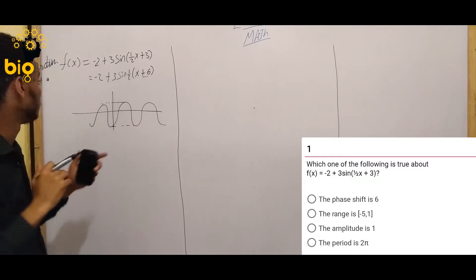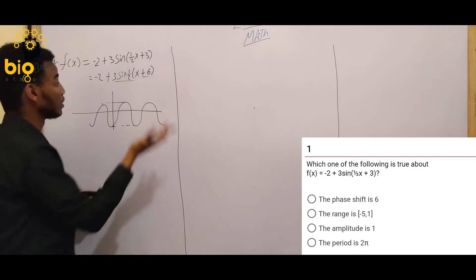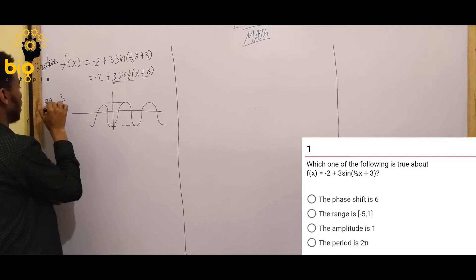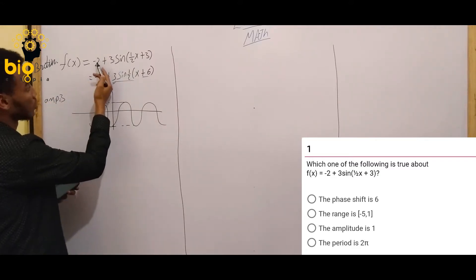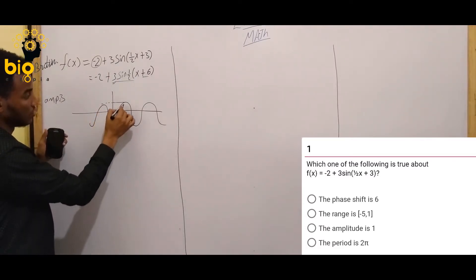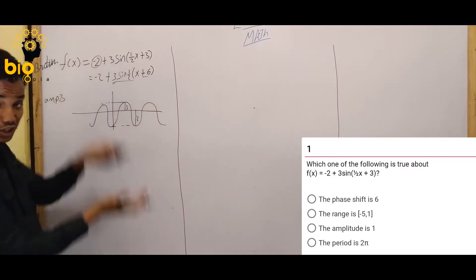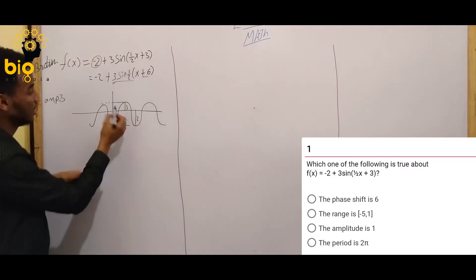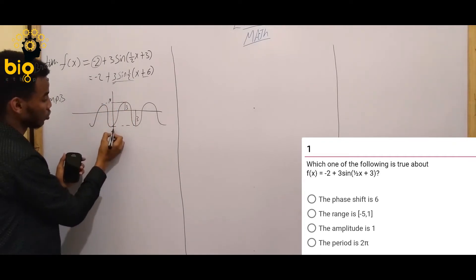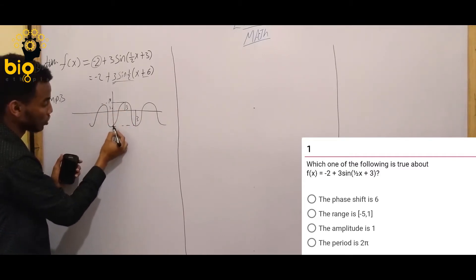Starting from the amplitude: the amplitude of the function — the coefficient gives us the amplitude. The amplitude is 3. So the range is determined by the amplitude. The function's value range: the coefficient is 3, so the amplitude is 3.